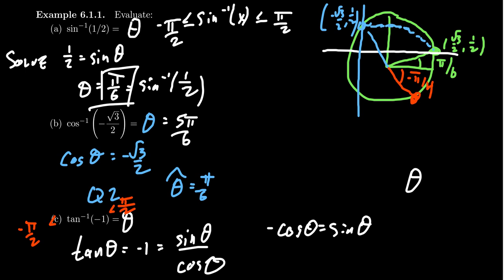This may seem a little clunky at first, but it's something you get used to. You turn an inverse trig function into a regular trig problem — just insert θ and ask: when is tangent equal to −1? When is sine equal to 1/2? When is cosine equal to −√3/2? Those are special angles we know from the unit circle, so we can compute these without a calculator.